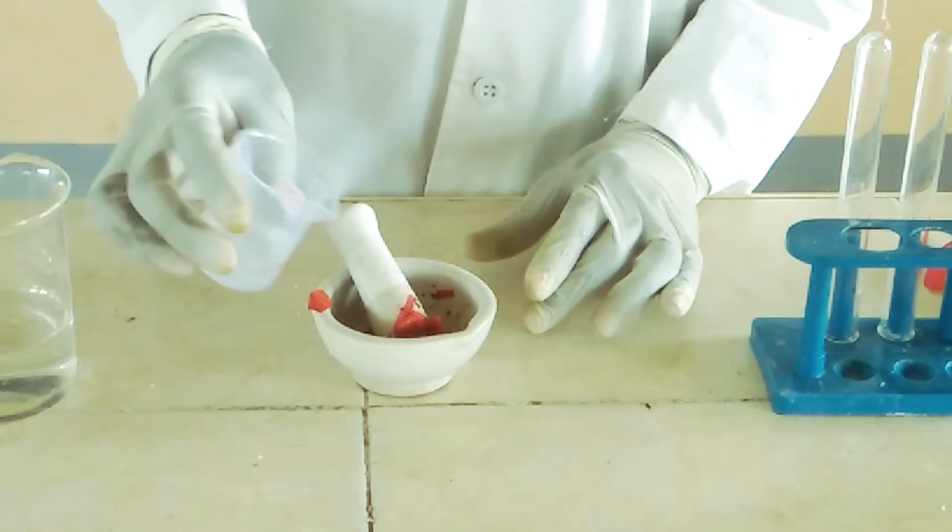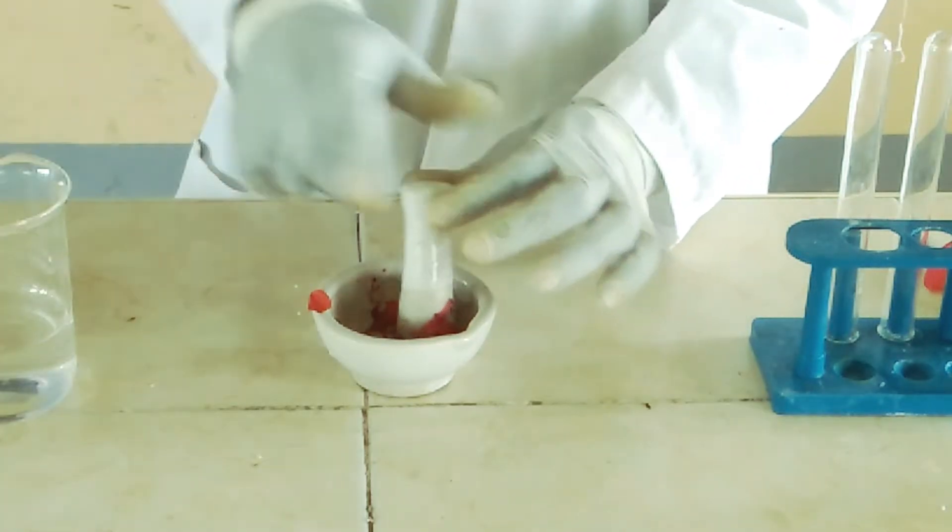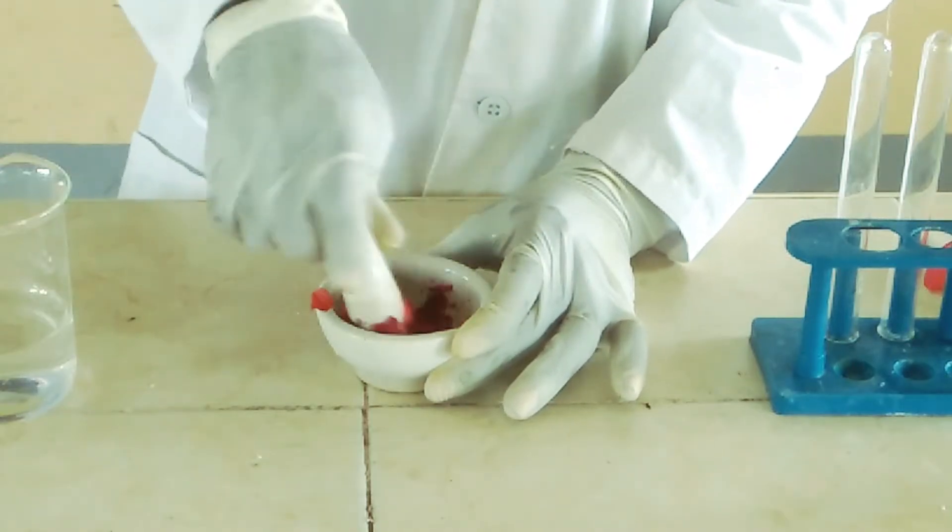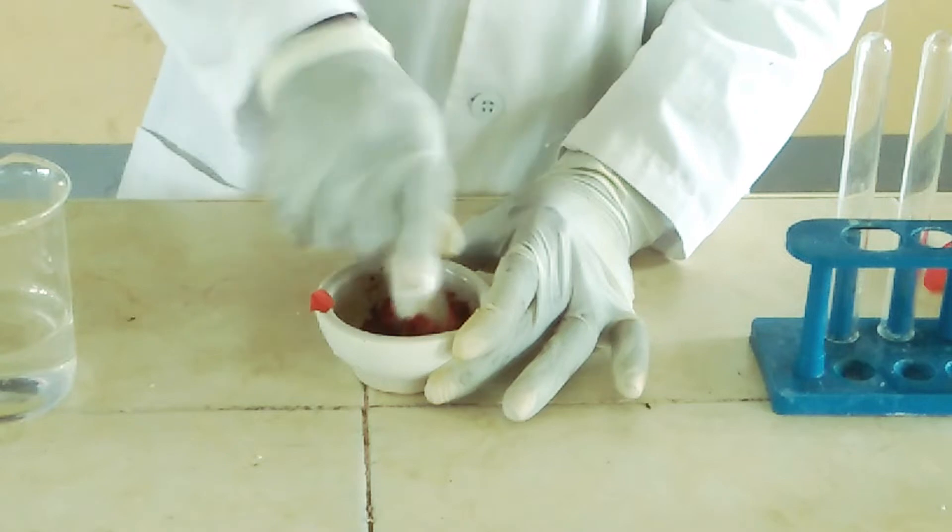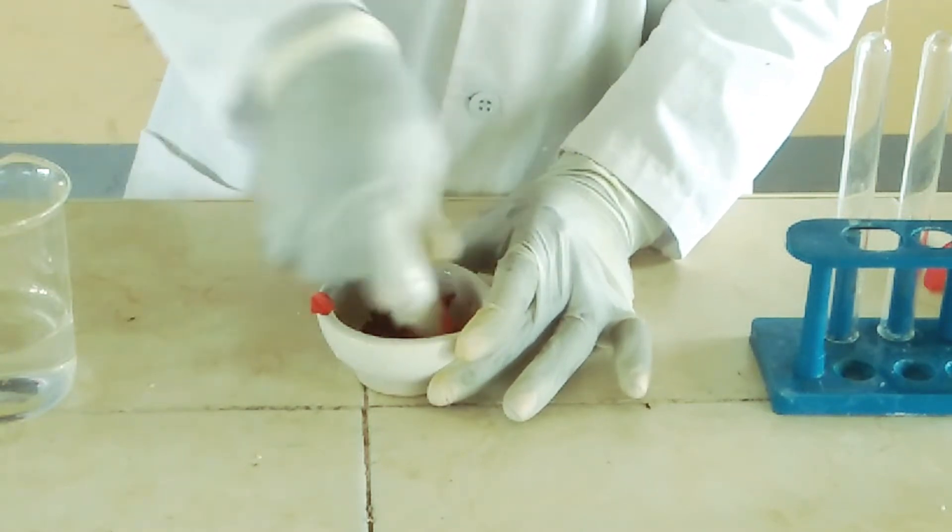Then I'm going to add some propanone into our crushed substance. You can also use ethanol. In case you don't have propanone, you can also use ethanol, which will still give us the same extract.